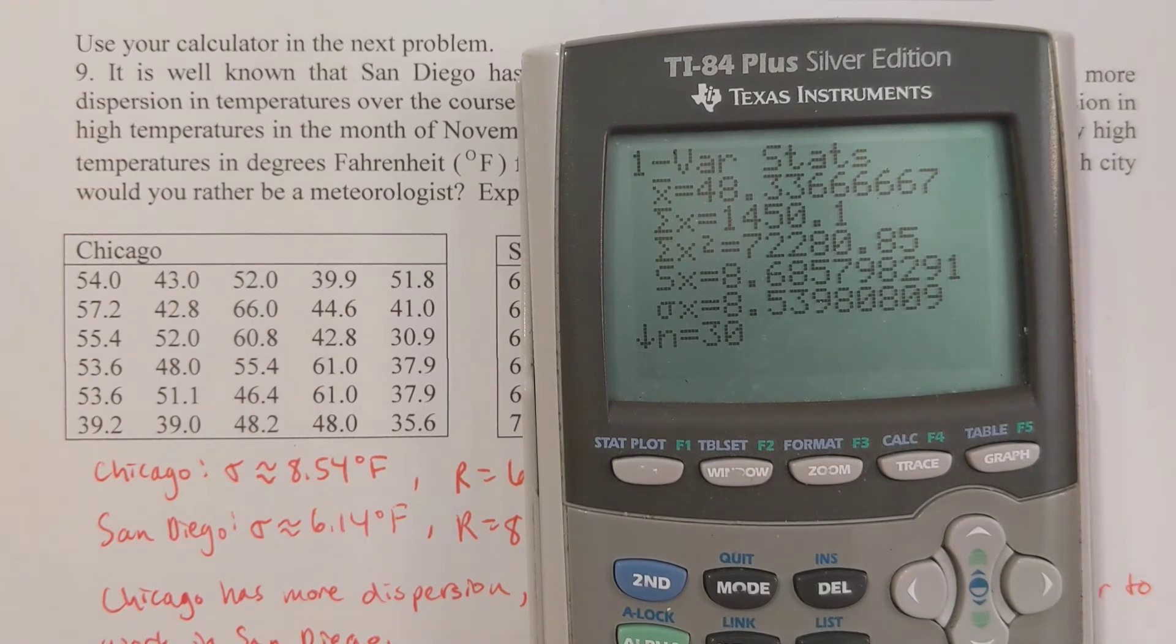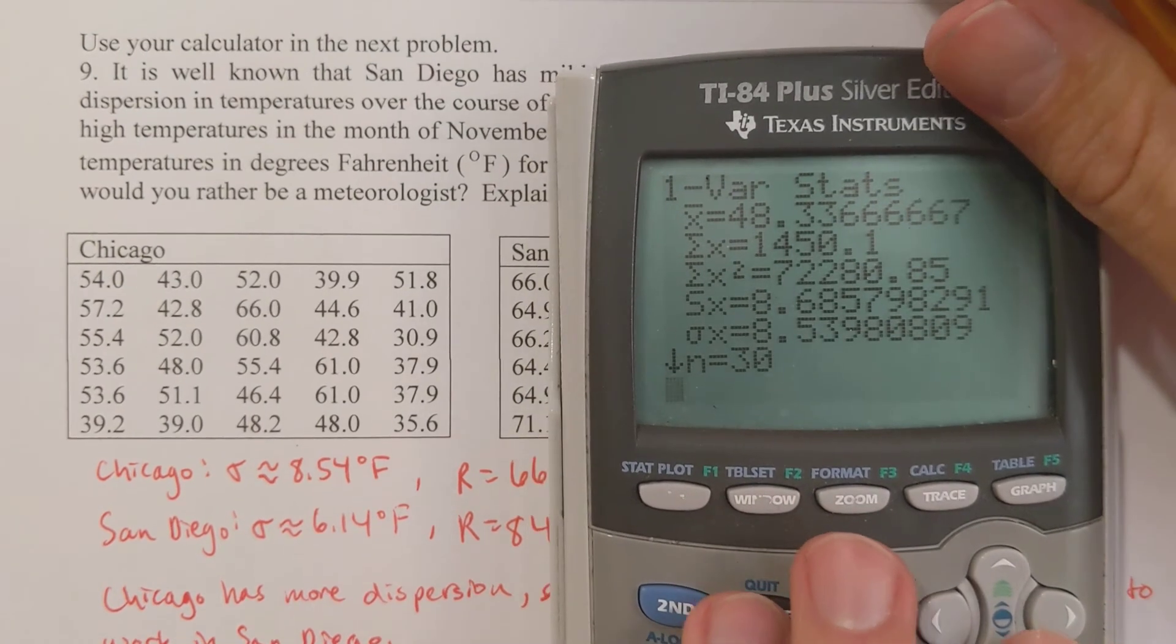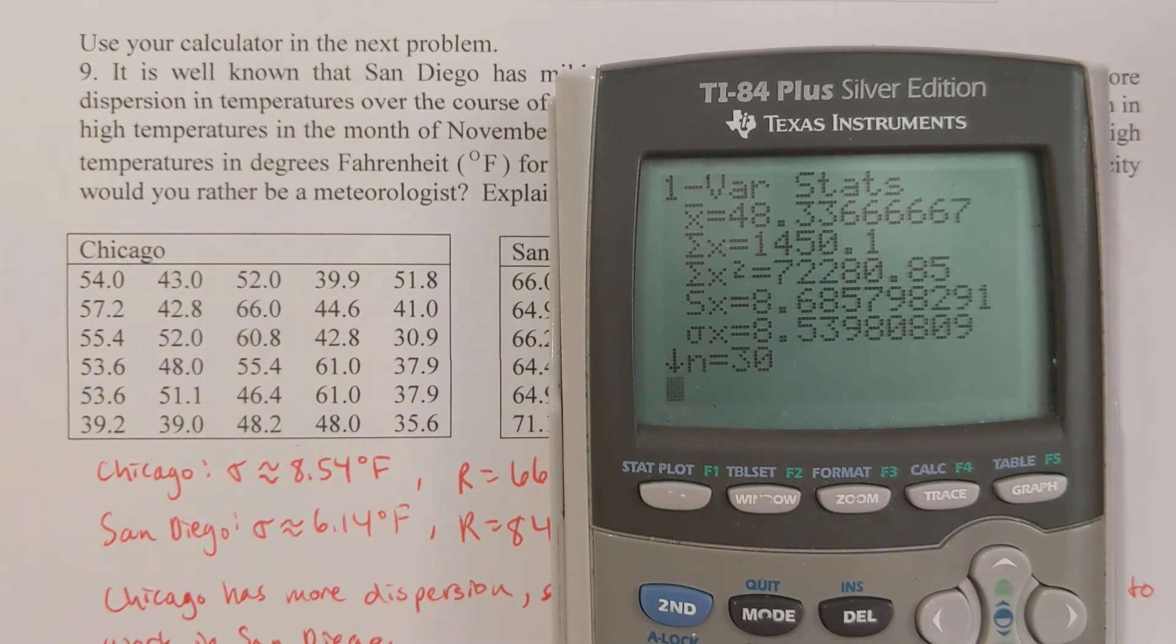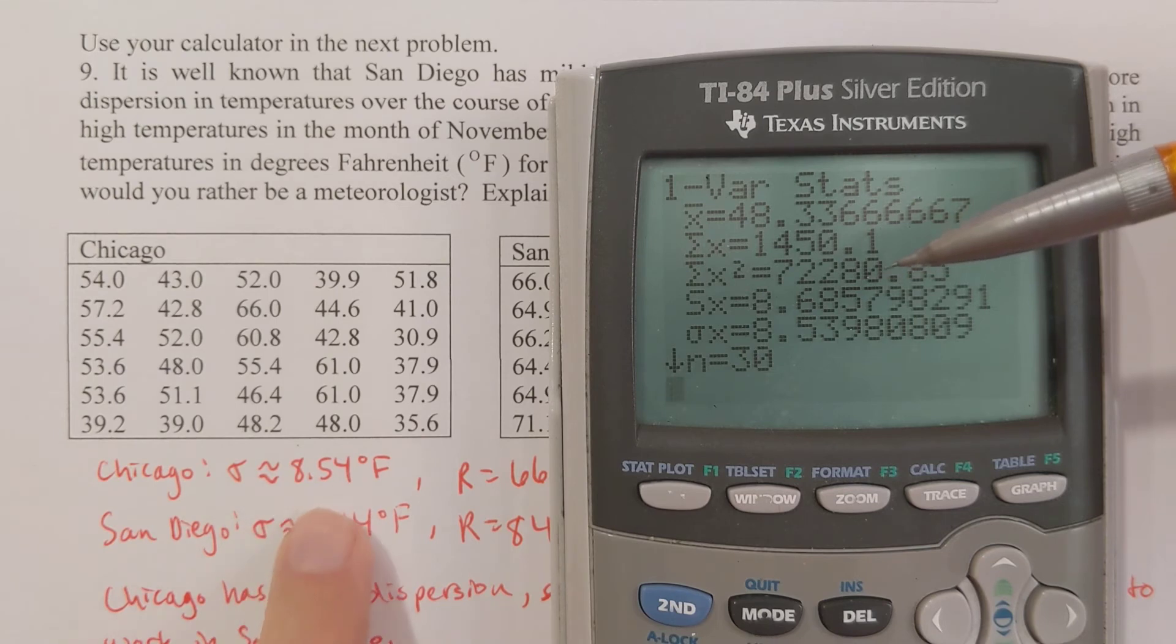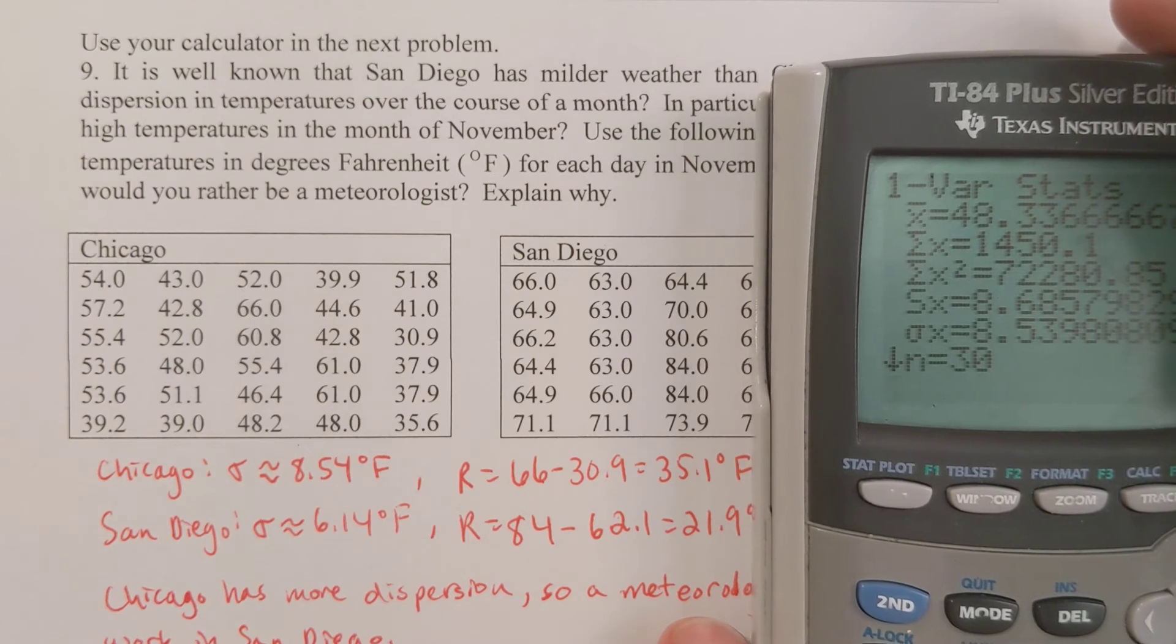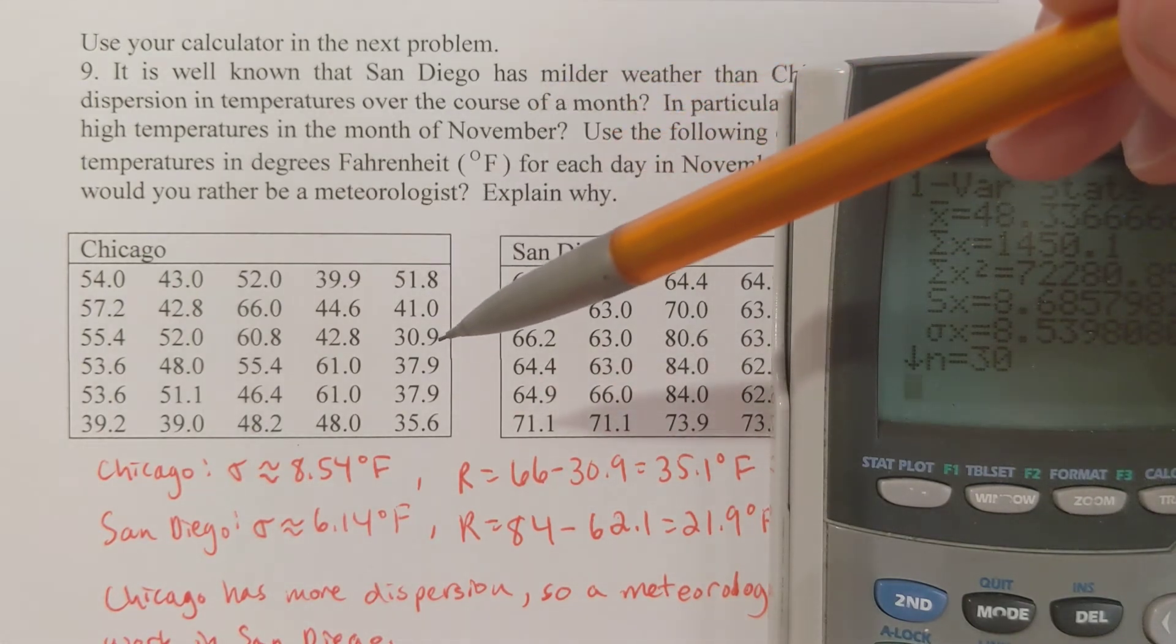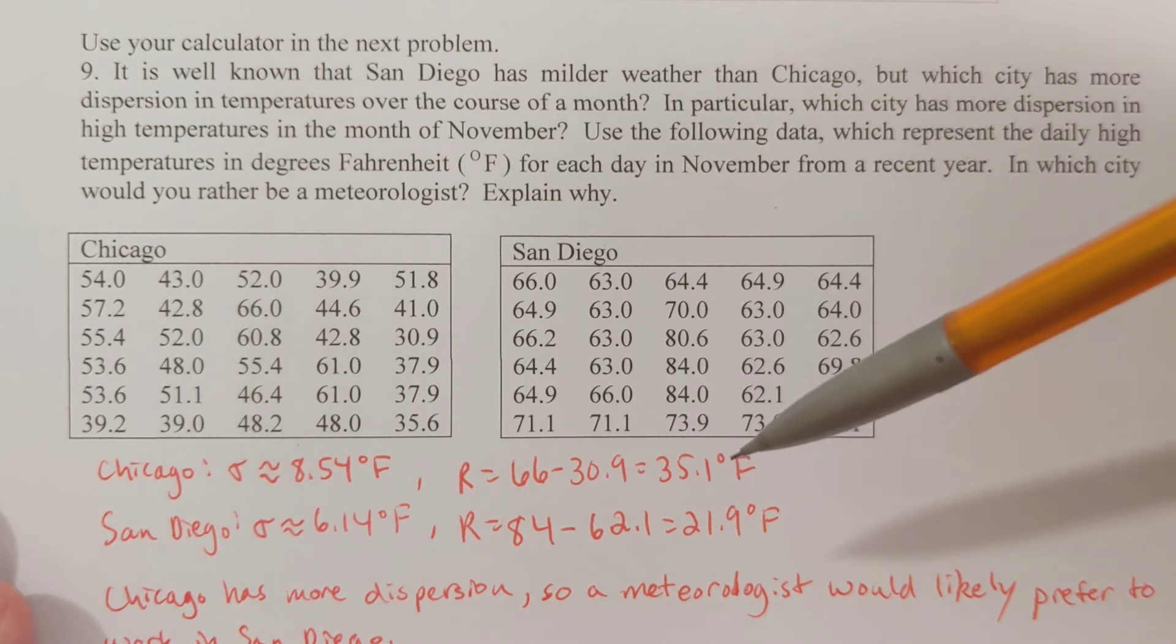Now we want to know in which city would you rather be a meteorologist and why? We're going to assume that the month of November is the entire data for the month, so you assume that this is a population standard deviation, not a sample. The population standard deviation I'm getting is 8.54 degrees Fahrenheit. The range, they're not asking for that, but the range would be where I take the highest value minus the lowest value: take 66 minus 30.9 and you get a range of 35.1 degrees Fahrenheit.